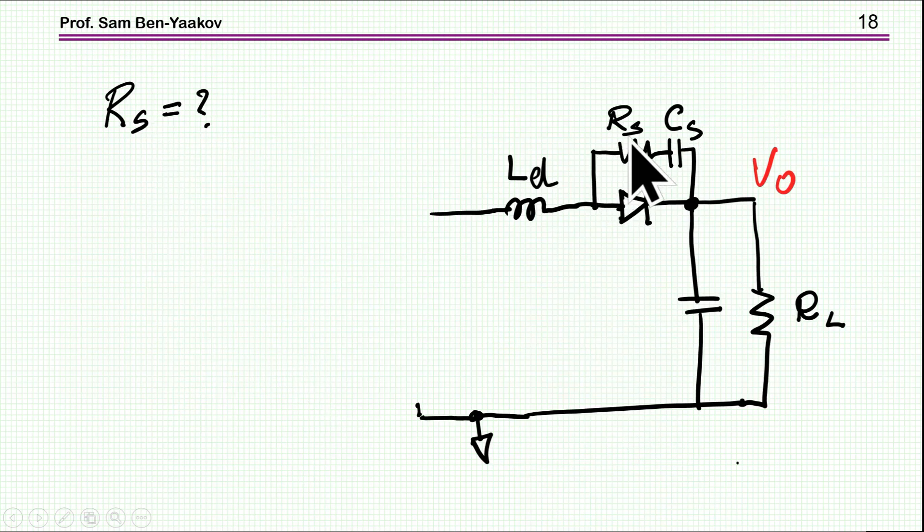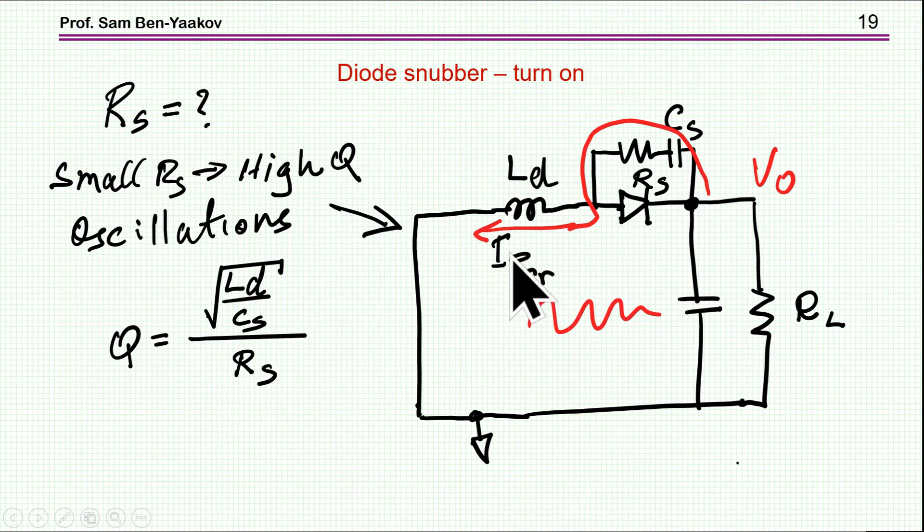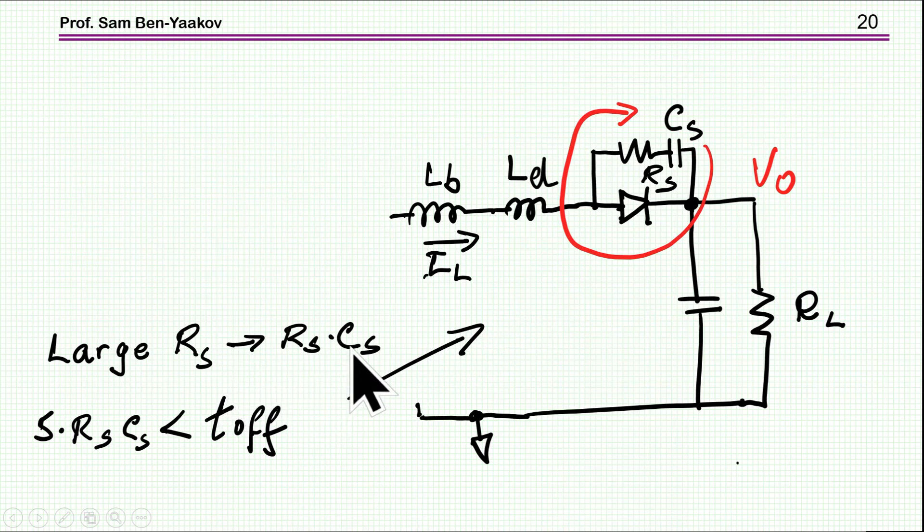Now, what about the resistance? The resistance has to be there because if there is no resistance, or if the resistance is very low, then the Q of the circuit, the quality factor, will be high because the quality factor is the characteristic impedance over RS, and I'm going to have oscillations here, which is no good. So, I have to choose RS so that I'll have a quality factor below 1 or 0.5 or even a little bit lower than that. What about a large RS? Well, if the resistance is large, then we have the problem of the discharge of the capacitor. So, we have to make sure that the time constant is shorter than the time expected in the circuit. Otherwise, the circuit will not discharge.